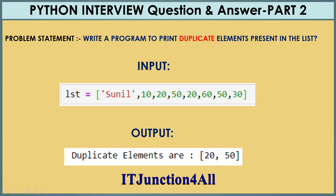We will be printing duplicate elements from this list. If you look at the list elements, you can find that 20 is repeating two times, 50 is repeating two times, and the rest — 10, 30, 60 — are present only once. So the duplicate elements, 20 and 50, are present in the output. Let's see how we can do this in Jupyter Notebook.